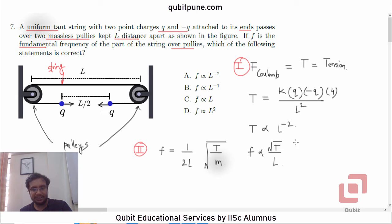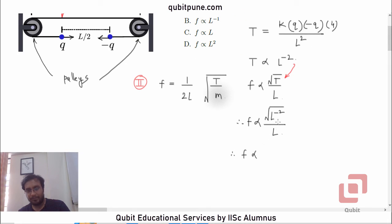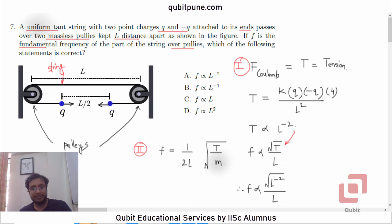Let's combine the two proportionality relations and see what we get. Therefore, F will be directly proportional to square root of L to the power negative 2 upon L. That is nothing but L raised to negative 1 in the numerator or 1 upon L in the denominator. It already has 1 upon L in there, so it will effectively be 1 upon L squared. Or F varies with L to the power negative 2, and that option is A.